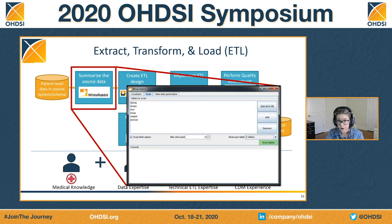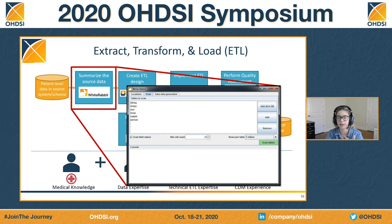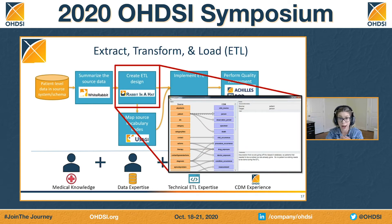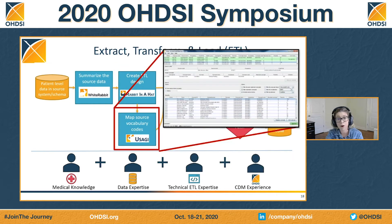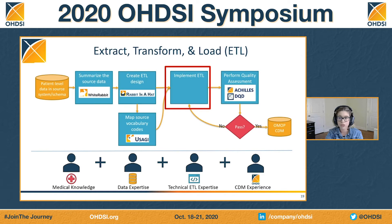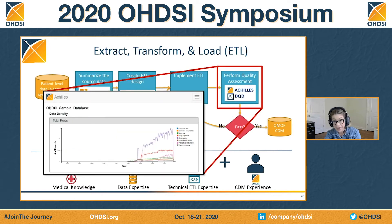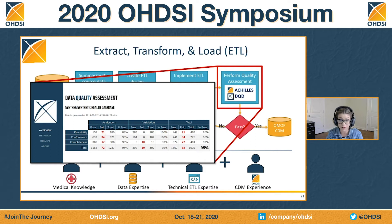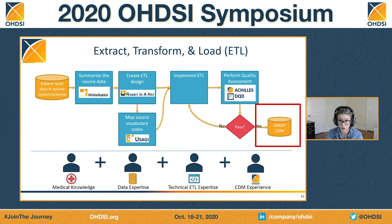If you have a data set and you're ready to convert it, the first thing you need to do is characterize it. We use a tool called White Rabbit — it's going to tell you about the tables, the columns, and what the data looks like. Once you've characterized it, you're going to design your ETL using Rabbit-in-a-Hat. While you're doing the design, you'll probably find scenarios where vocabularies aren't in the OMOP vocabulary and you need to do a mapping to standard terminologies. Once you're done with the vocabulary mapping and ETL design, you implement your ETL. Then you look at how it's done through Achilles, which gives you a high-level characterization to see if something looks off. We also have our Data Quality Dashboard, which gives you a score of how well you did and tells you when things went wrong, so you can choose to address it or note that your data set doesn't need that. When you've gone through this process, you'll land at a CDM that you feel comfortable using for research.